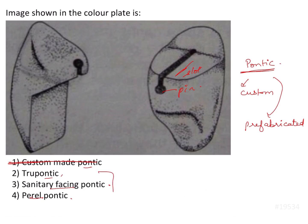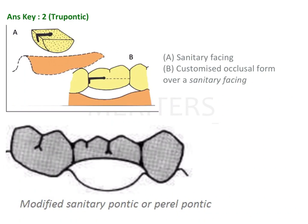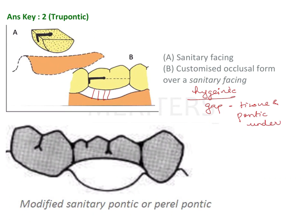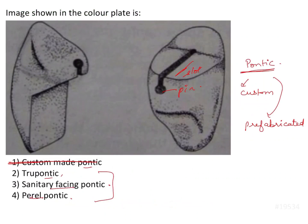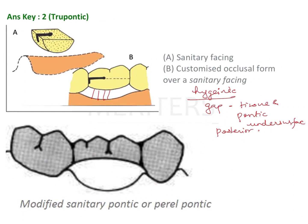To evaluate the options, let's look at the sanitary facing pontic. 'Sanitary' means hygienic pontic — it is going to have a gap between the tissue and the undersurface of the pontic. This means it can only be used in posterior areas. However, in the image we can see an incisor or a canine, which is an anterior tooth.